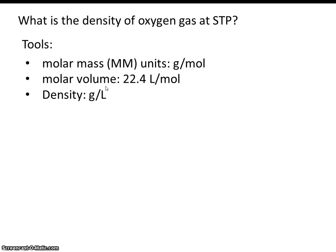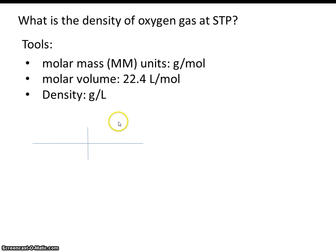So what is the density of oxygen gas at STP? We're going to fit this together using dimensional analysis, remembering that units in the numerator and denominator, if they're the same, will cancel out. When it says what is the density of oxygen gas, ultimately our answer should be grams per liter — we need grams in the numerator and liters in the denominator when we're finished.